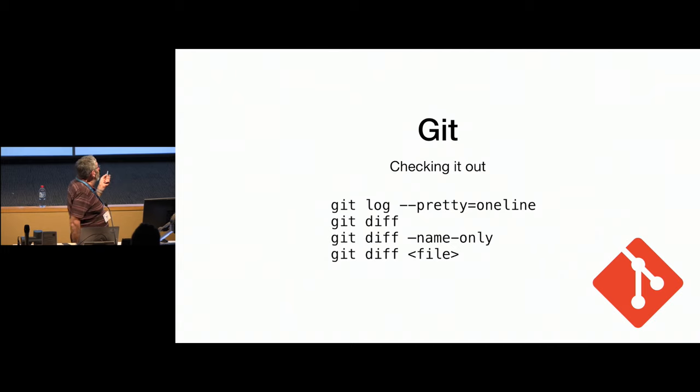When we actually want to find changes, we can use git to find the changes. Git log, with the minus pretty equals one line, will print out one line for each commit in our repo, and it will show the commit ID, and it will show the commit message all in one line. That's why it's nice to have the date in the commit message. And then git diff will dump out every single change between the previous version and the current version that is sitting in our Git repo. That's usually a huge output. So instead, we can use git diff minus name only.